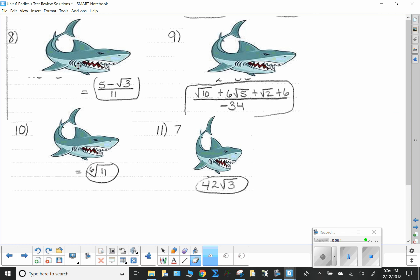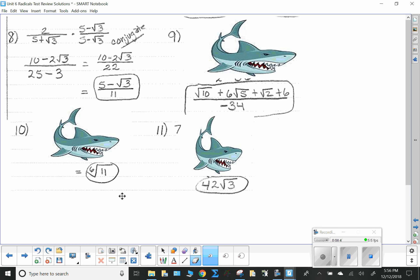Number 8. 2 over 5 plus square root of 3. It's a binomial, therefore I must use the conjugate. Gotta use the conjugate here. What is the conjugate? Well, since this is 5 plus root 3, I'm going to use 5 minus root 3. I have to have the same thing over the same thing, so that it is a form of 1. This is the property of 1, or the multiplicity of 1. So now, I'm going to distribute the 2 to the 5, and to the minus root 3. So I get 10 minus 2 root 3.